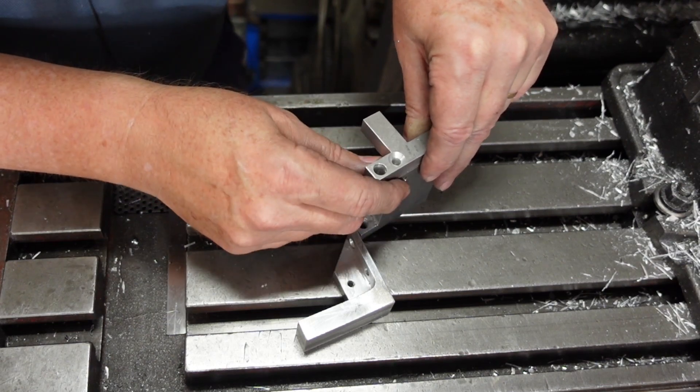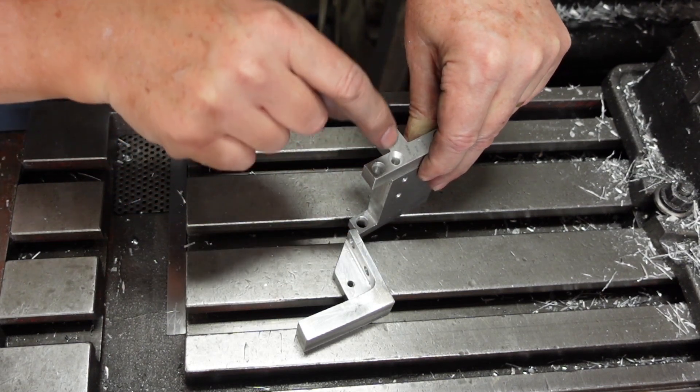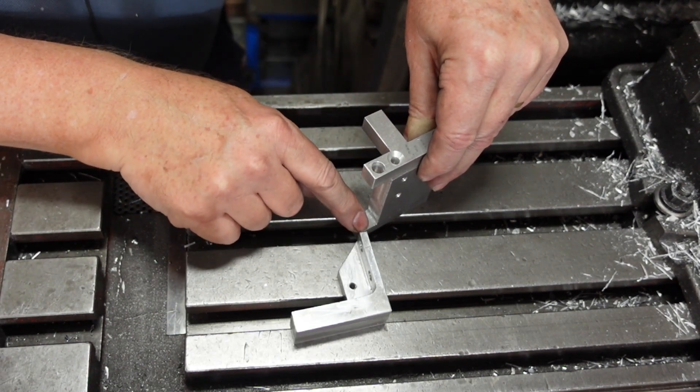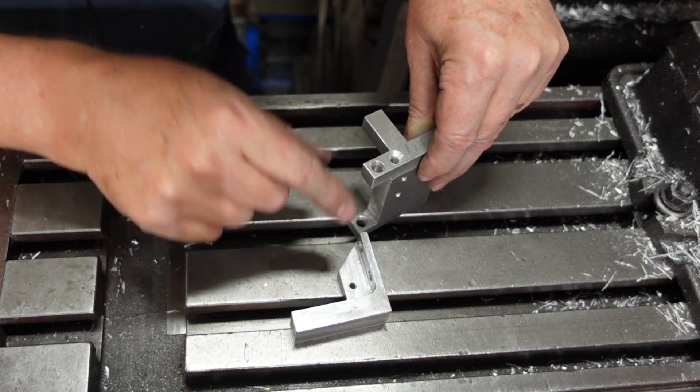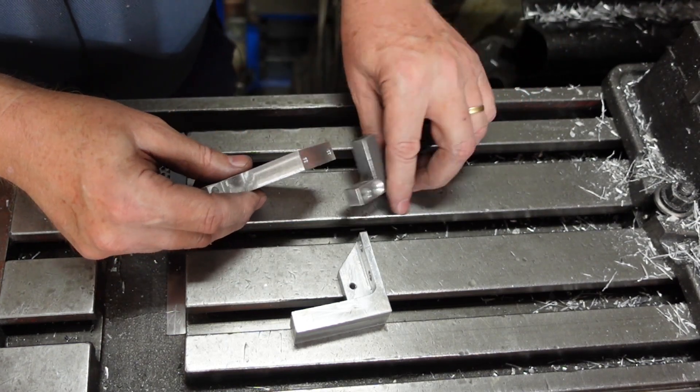This bit which is about half made will bolt on to there and that'll hold the top indicator plus provide the pivot point for the paddle. So that'll sit in there like that.